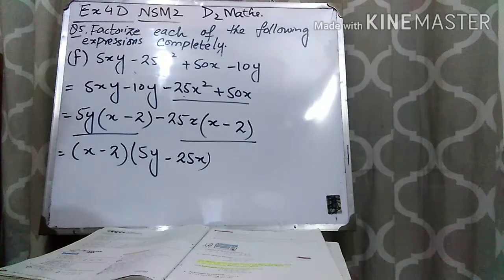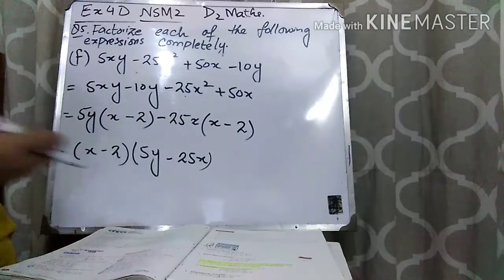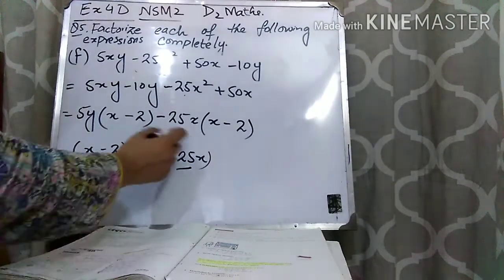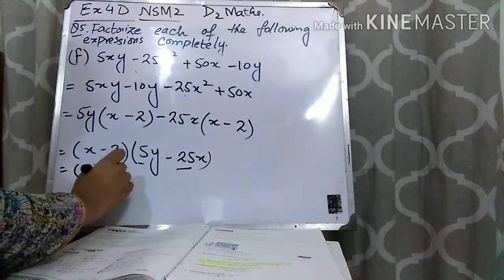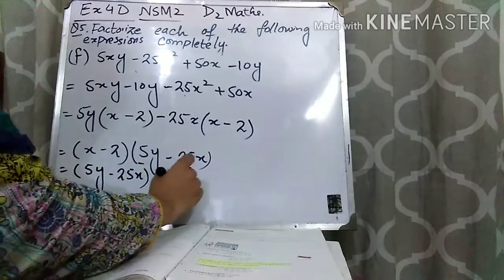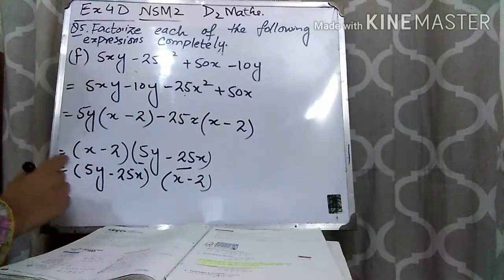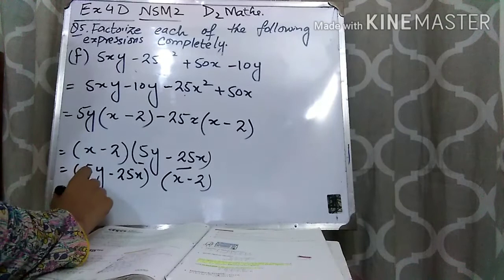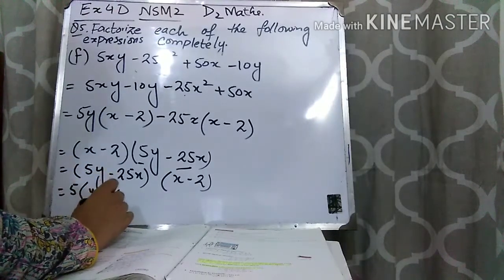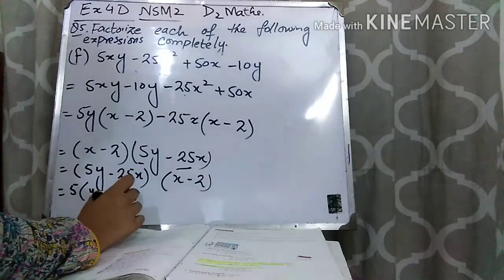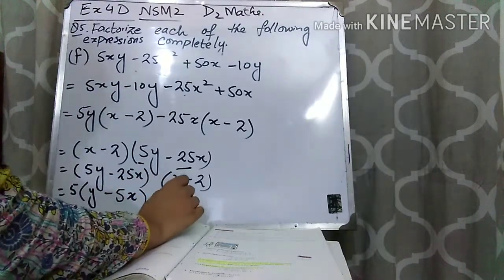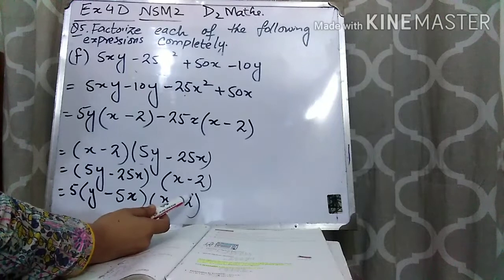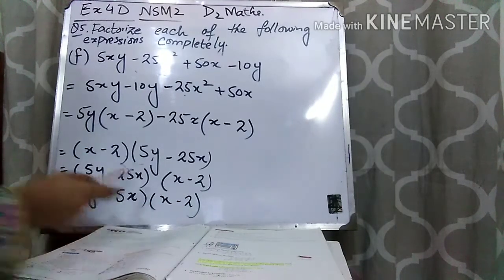Now one more thing: in this bracket you can see that 5 and 25 are both divisible by 5, so you can also take 5 common from this bracket. First write the bracket x minus 2, then take 5 common from the second bracket. So just y is left, and 5 times 5 is 25 so write 5x. Now write x minus 2 as it is. Students, your answer is 5(y minus 5x)(x minus 2). I hope that part F is clear to you.